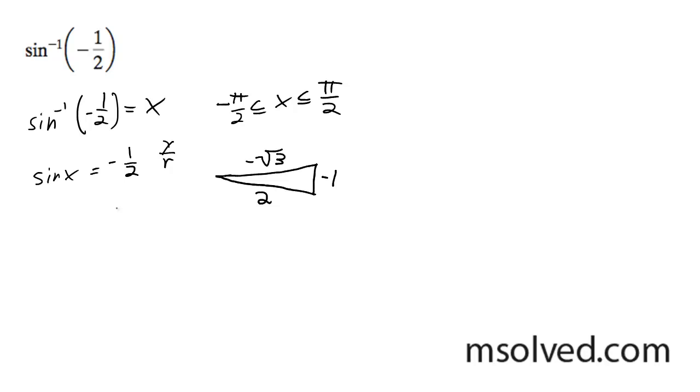This is a 30-60-90 triangle, so this is negative pi over 6. In this case, x is going to be equal to negative pi over 6.